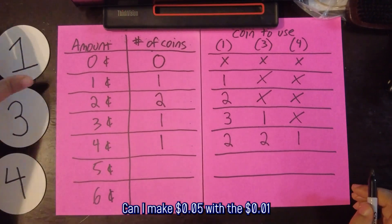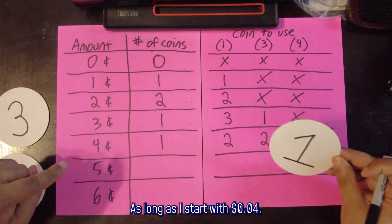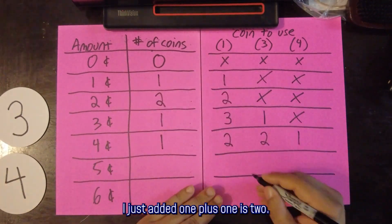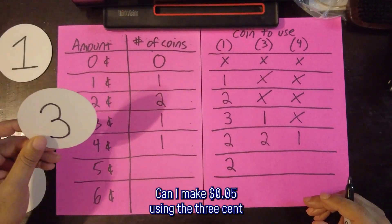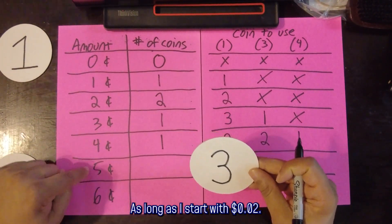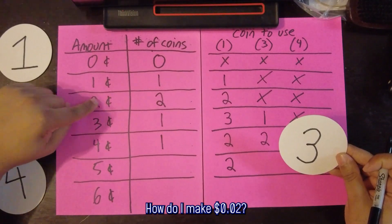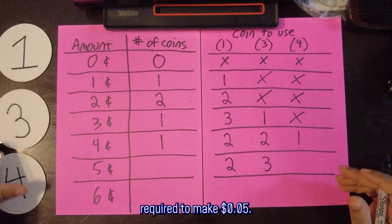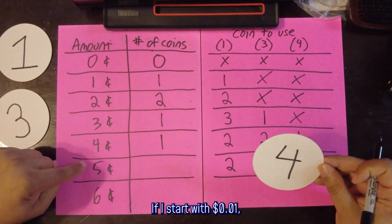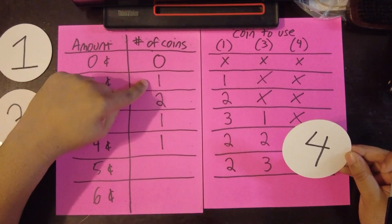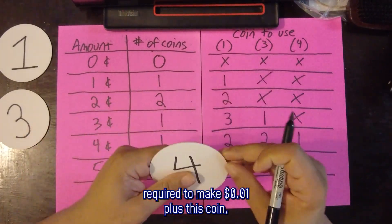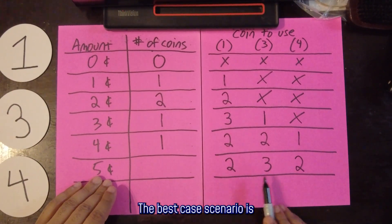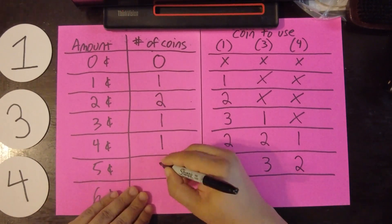Now let's try 5 cents. Can I make 5 cents with the 1-cent coin? Yes, starting with 4 cents: one coin plus one coin equals two. Can I make 5 cents using the 3-cent coin? Yes, starting with 2 cents: two coins plus this coin equals three. Can I make 5 cents using the 4-cent coin? Yes, starting with 1 cent: one coin plus this coin equals two. The best case is two coins — it's a tie between the 1-cent and 4-cent approaches.